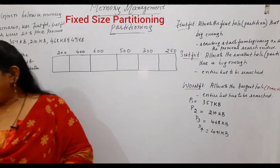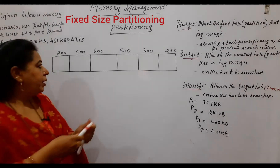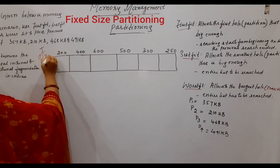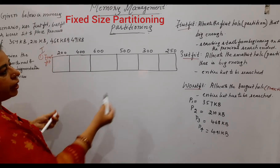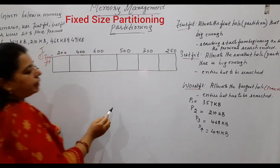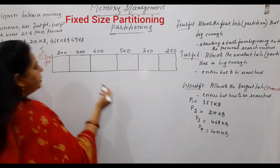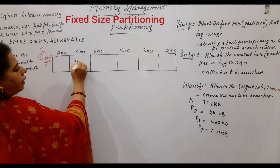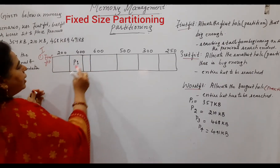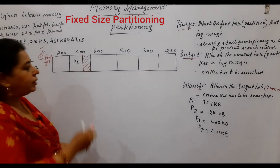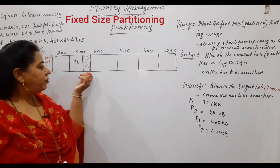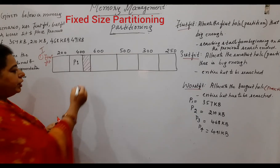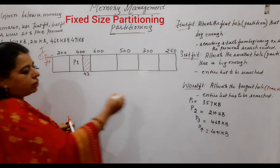Now let's apply the first fit algorithm using the given memory diagram. First fit says allocate the first partition that is big enough. P1 is 357 KB — you cannot accommodate it in the first partition. The next partition of 400 KB is available, which can easily accommodate P1. So P1 will get accommodated there, but there will be some leftover space since P1 is 357 and the partition is 400 KB.